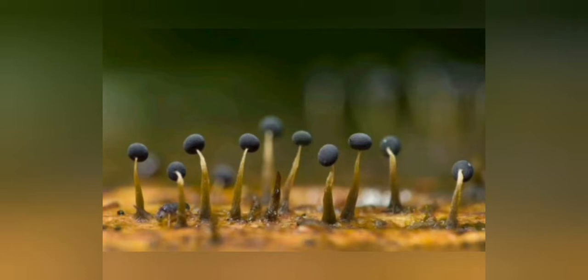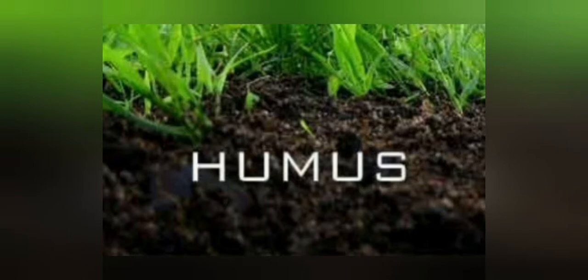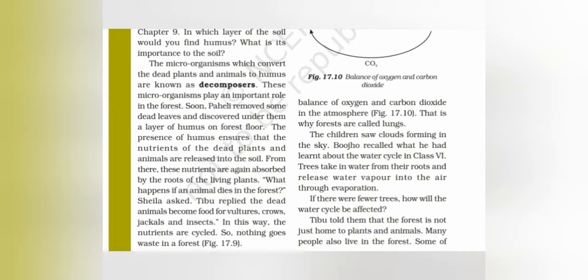These microorganisms feed upon dead plant and animal tissues and convert them into a dark colored substance called humus. Microorganisms which convert dead plants and animals to humus are known as decomposers. The presence of humus ensures that the nutrients of dead plants and animals are released into the soil, and these nutrients are again absorbed by the roots of the living plants.